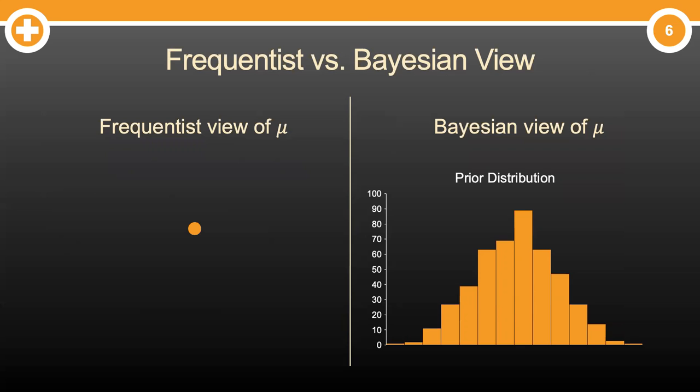Well, the frequentist basically assumes that true population value isn't moving. A Bayesian, on the other hand, thinks that is silly. Of course the population mean is changing. Then they assume how it is changing.